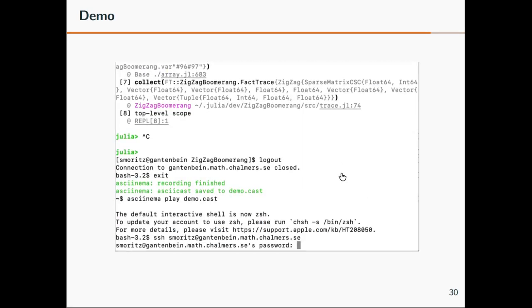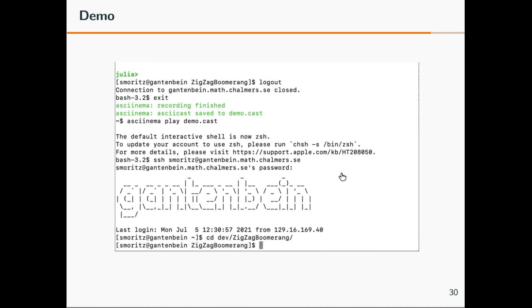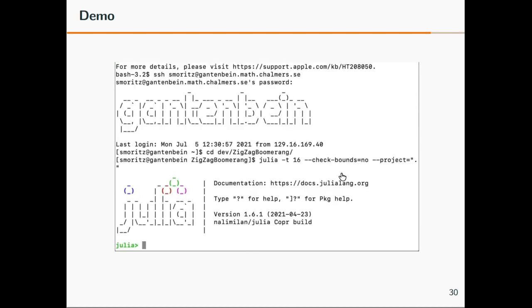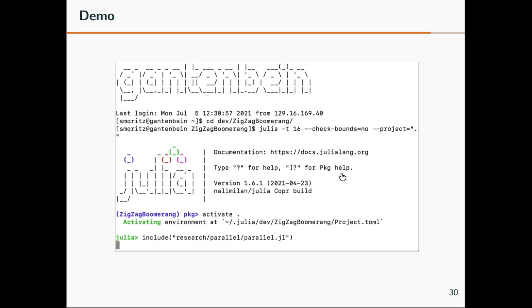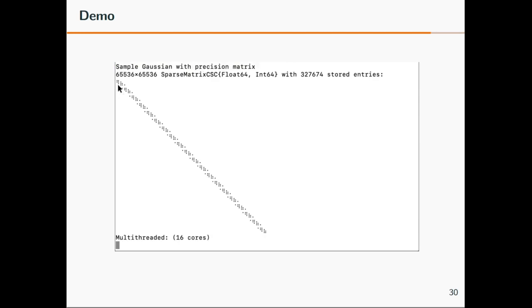Here you see me on our university server. I can illustrate how it works with several threads. I'm starting Julia, maybe with 16 threads. Then I run a small sample problem, a bit smaller than the one with the picture. You see that this is about sampling from a Gaussian with 65,000 pixels. The correlation structure is squared and the sparse matrix to that. I have 16 cores. You see the progress meter. It goes really fast. And now let's wait a bit.